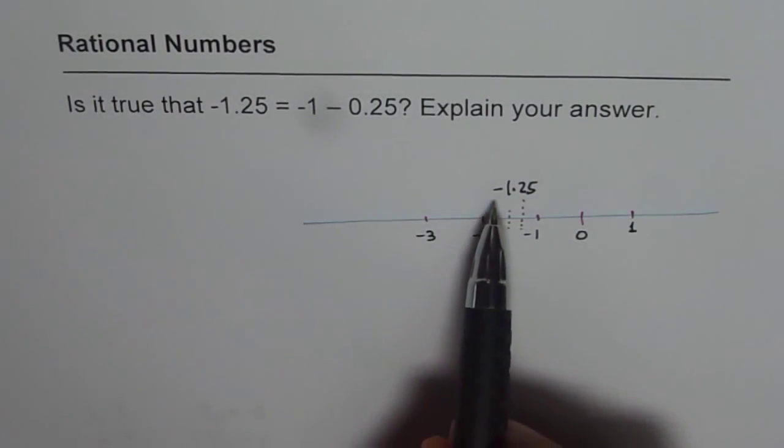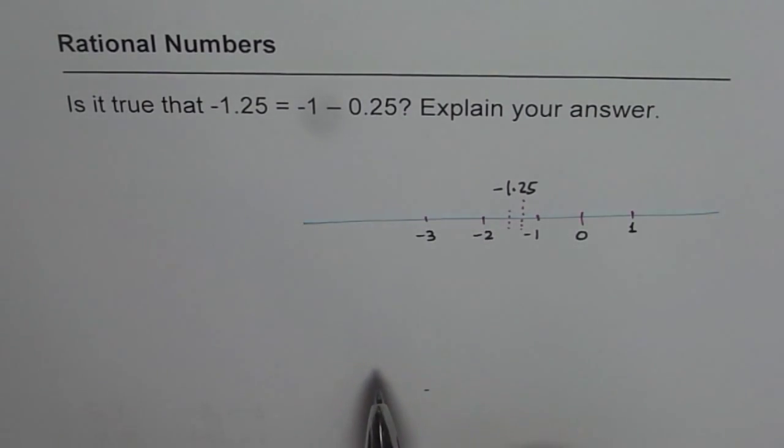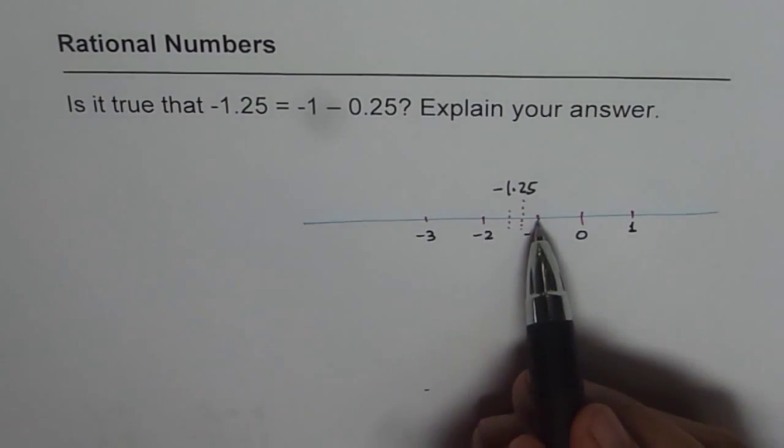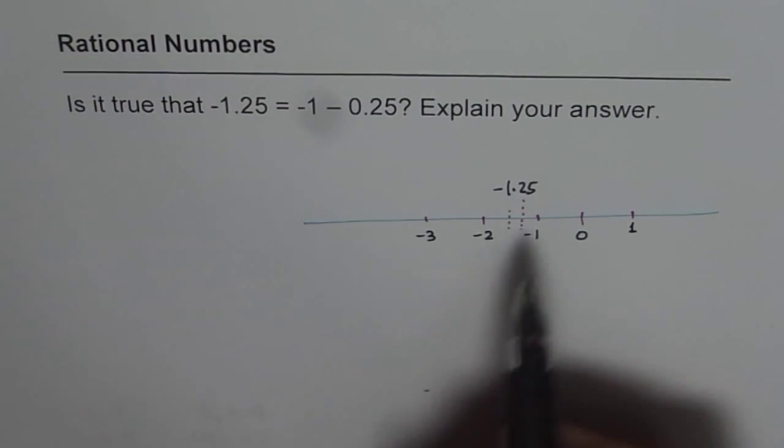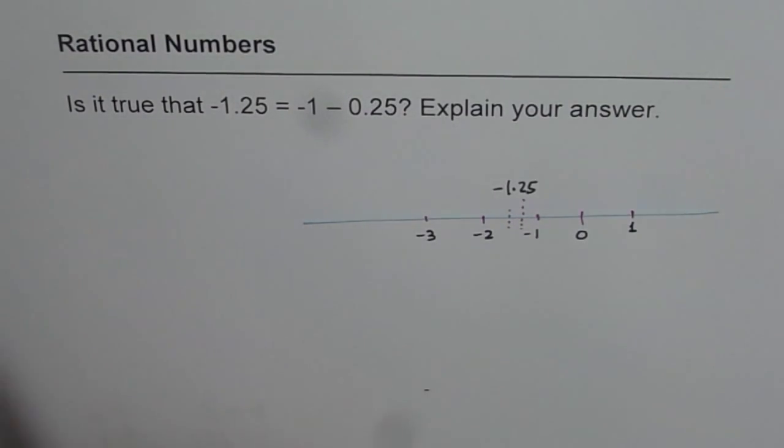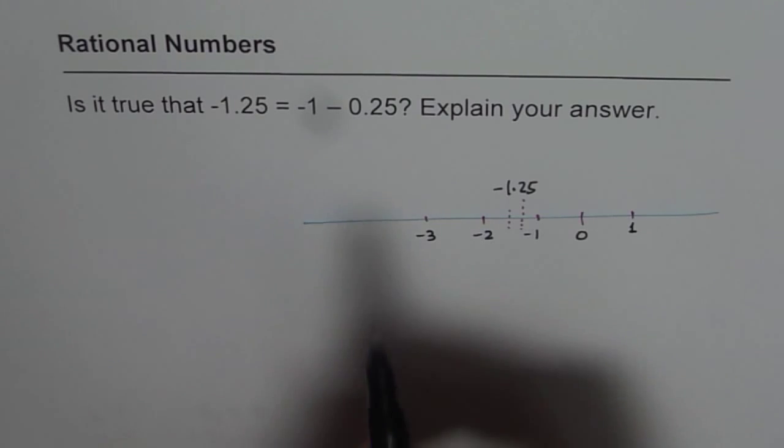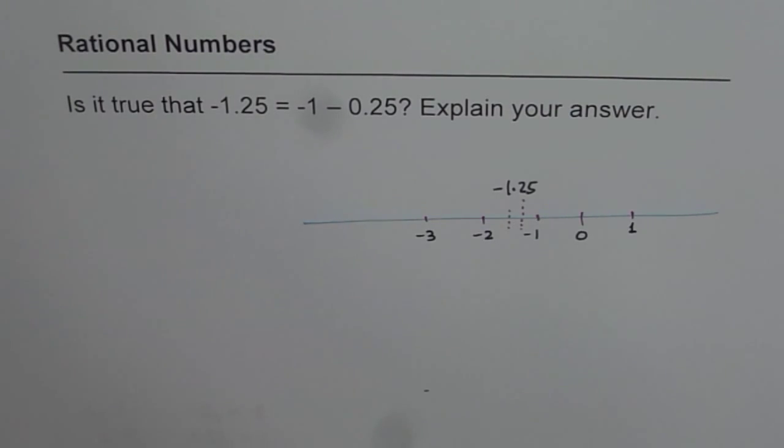The question is, can I write -1.25 as -1 - 0.25? Well, this is a quarter. Can I write it or no? Think about it. That is the question.